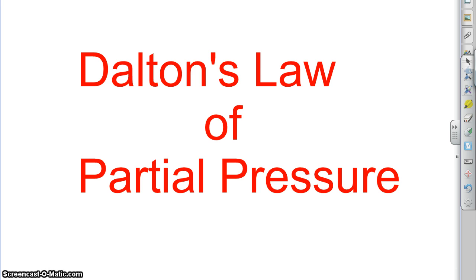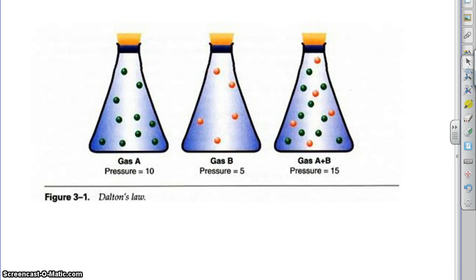Here's what Dalton's law says. Imagine we have a flask containing gas A with a pressure of 10 and a flask containing gas B with a pressure of 5. Now you somehow mix those two things into the same container so you have gas A and B mixed together. It says here that the pressure would be 15, which makes sense because pressure is just a measure of how often these particles collide with the side.